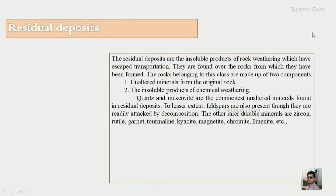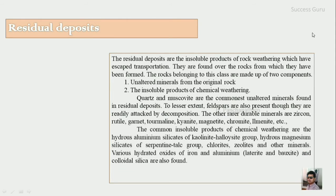For the unaltered minerals from the original rock, quartz and muscovite are the commonly unaltered minerals found in residual deposits. To some extent you can expect feldspar, although feldspars are readily attacked by decomposition. Other durable minerals include zircon, rutile, garnet, tourmaline, kyanite, magnetite, chromite, ilmenite, etc. The common insoluble products of chemical weathering are hydrous aluminum silicate of the kaolinite-halloysite group and hydrous magnesium silicate of the serpentine-talc group.